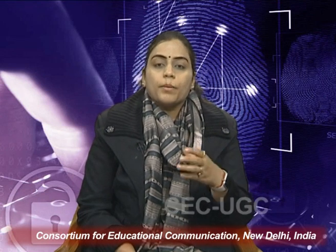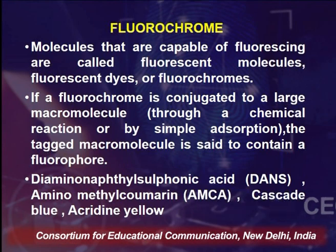Whenever the molecules of any substance go to the excitation state and come back to the ground state, they emit two types of light. One is the excitation light, which includes the fluorescent light also. The emission light reaches the eye or other detector, and the resulting fluorescence area shines against a dark background, which provides sufficient contrast to permit its detection. The molecules used are known as fluorochromes — these are capable of fluorescence and are known as fluorescent molecules, fluorescent dyes, or fluorochromes.